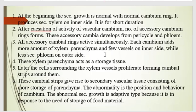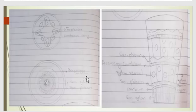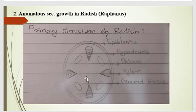The abnormality lies in the positional and behavioral changes of cambium. The anomalous secondary growth is an adaptive type because it is in response to the need for storage of food material. The storage tissue development happens due to these abnormalities in the position and behavior of cambium. In this way, these types of modifications are observed in radish.